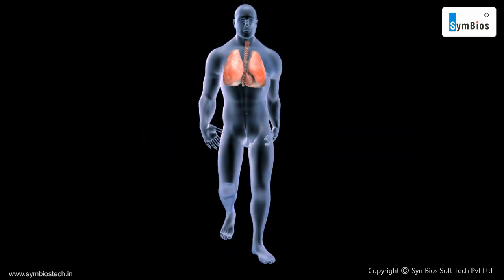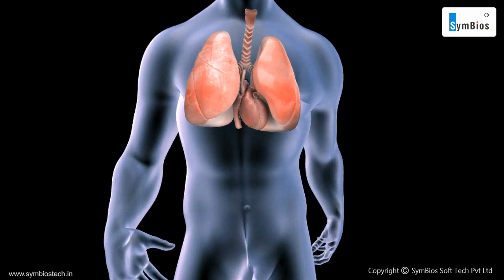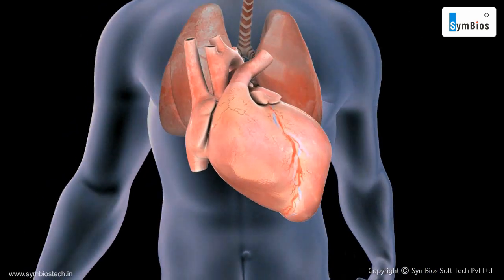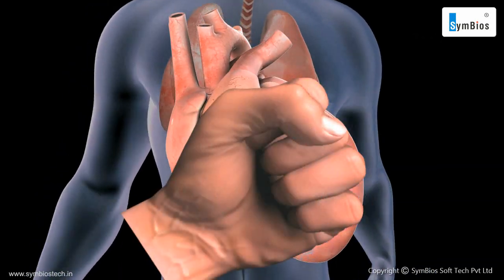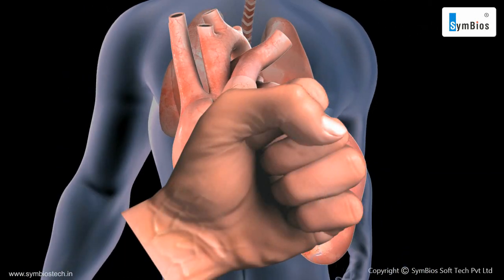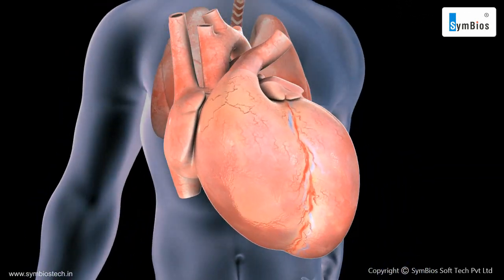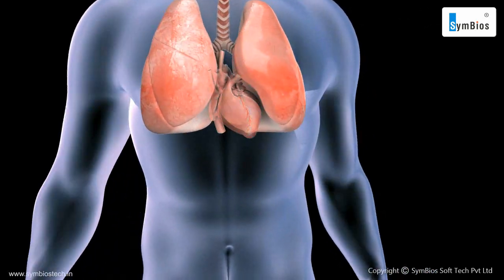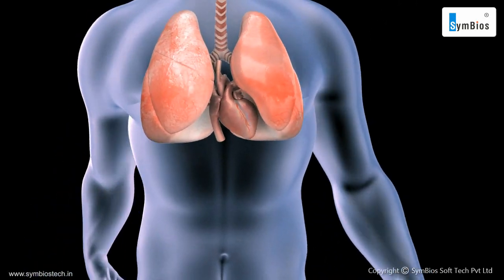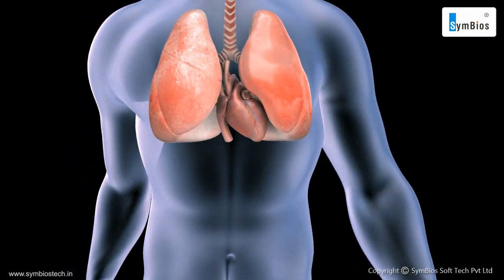The heart, which is a muscular organ, is the centre of the human circulatory system. It is approximately the size of a clenched fist, weighing about 250 to 350 grams, and is located in the thoracic cavity between the lungs, towards the left side of the chest.